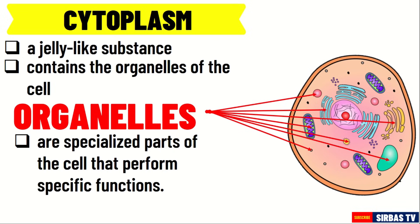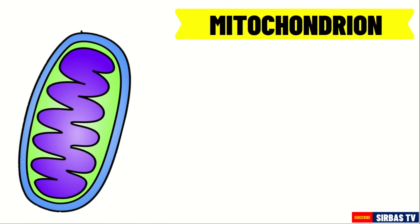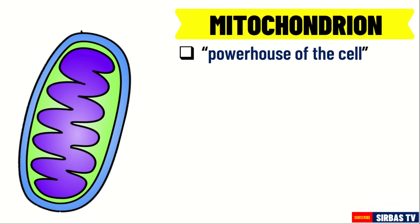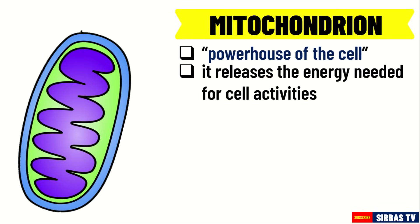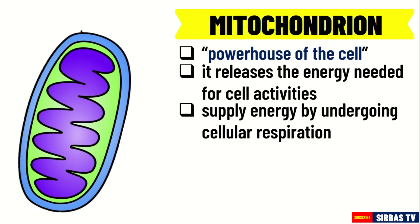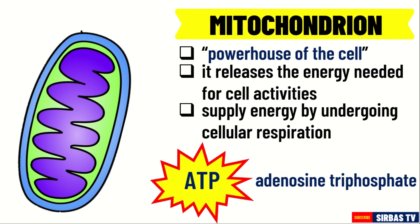Let us now explore the different organelles that can be found in the cell as well as their functions. First, we have mitochondrion, or mitochondria in its plural form. The mitochondrion acts as the powerhouse of the cell since it releases the energy needed for cell activities. They supply energy by undergoing cellular respiration. Cellular respiration is a process that produces adenosine triphosphate or ATP, which is the energy currency of the cell.